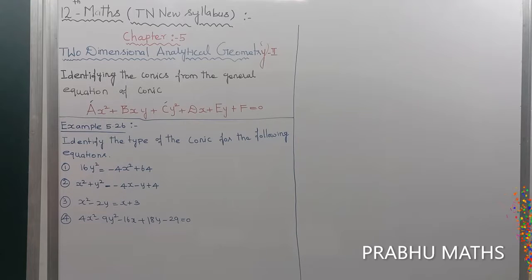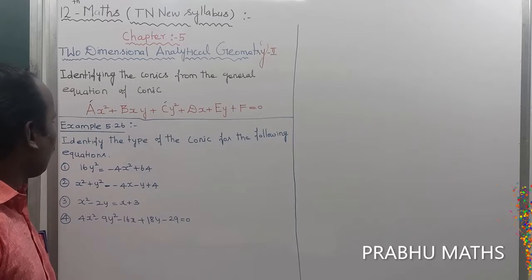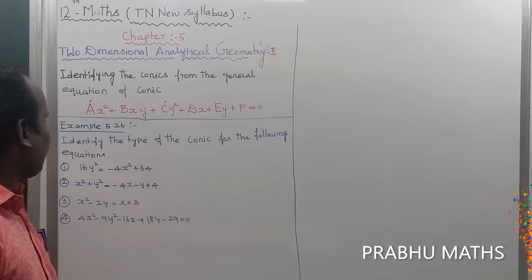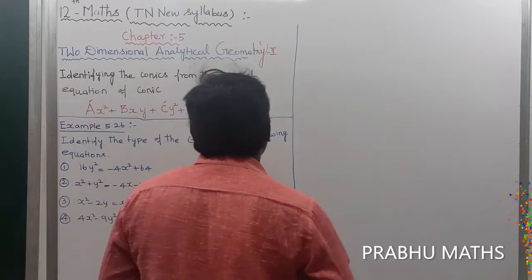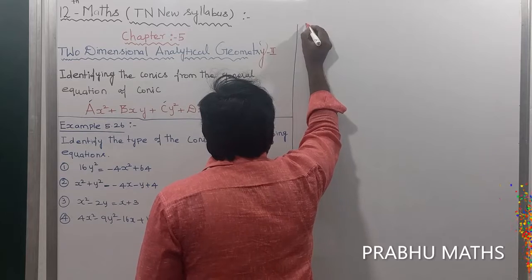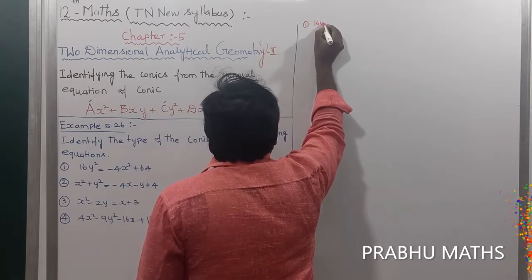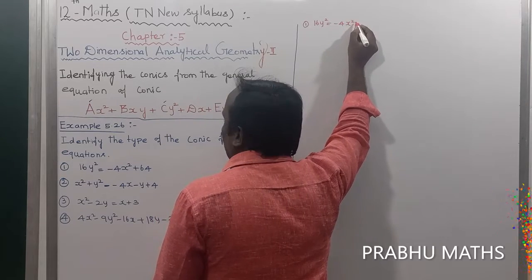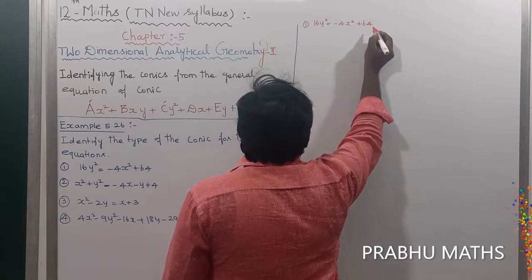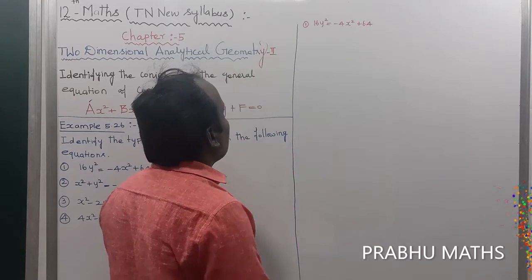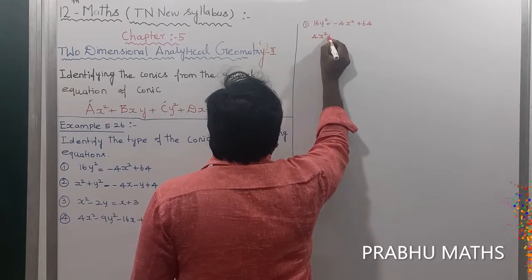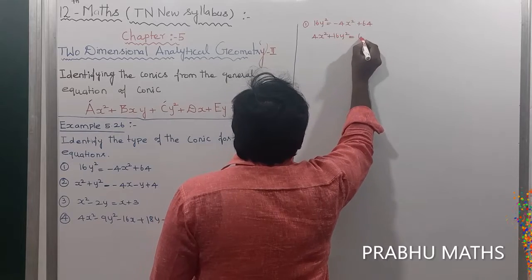Example 5.26: Identify the type of the conics for the following equation. The first equation is 16y² = -4x² + 64. Rearranging the given equation, moving -4x² to the left side, we get 4x² + 16y² = 64.